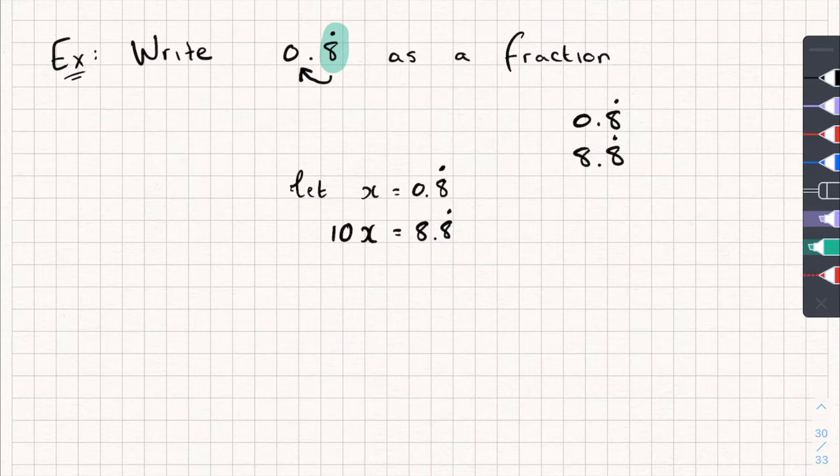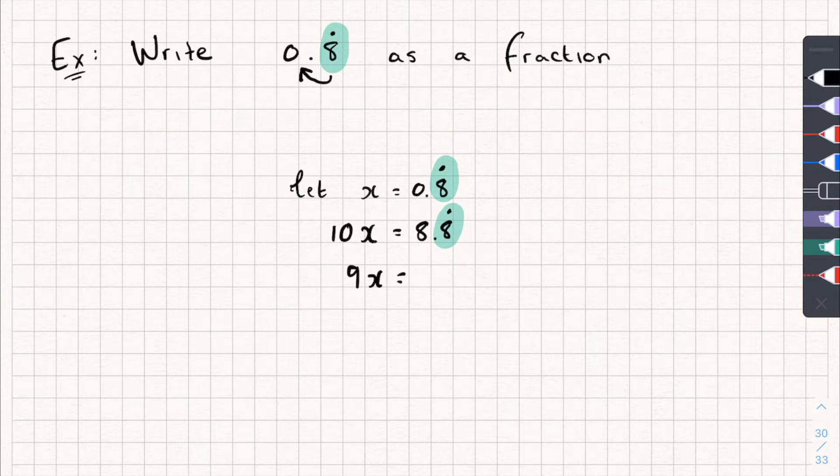Now you may be able to spot something that we could do here that might help. But we want to eliminate the recurring part of the decimal. That's the goal. And you might notice if I take 10x and I subtract x from it, I'll have 9x. But you'll also notice on this side that I'll eliminate the recurring part and I'll just be left with 8. So we've eliminated the recurring part of the decimal, which is the goal.